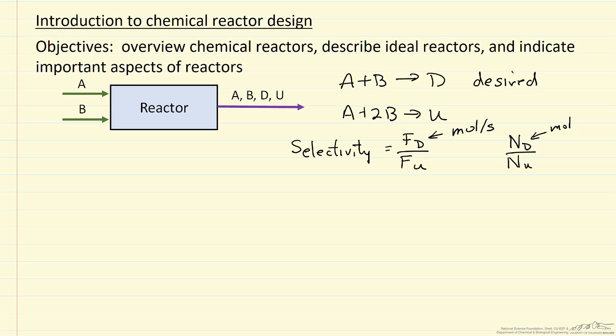If we react a lot of A and B to make a product U that we can't use, then we're essentially throwing away some of our reactant that we have to buy.